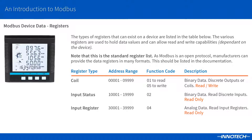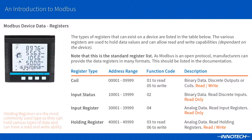An input register starts at 30001 and goes up to 39999. Function code 4 is used to read back the data value. Inputs hold analog values and are read only — think of an input register as an analog input. Holding registers start at 40001 and go up to 49999. Function code 3 is used to read the value and Function code 6 is used to write a value. These are read and write registers and hold any type of analog value. Holding registers are the most common type used as they provide more flexibility. Refer to the device documentation as only certain registers allow write access, and this is determined by the manufacturer.